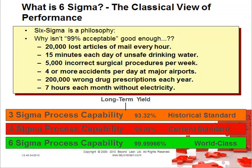If you've got 99% acceptable, you've got 20,000 lost articles of mail every hour, 15 minutes a day of unsafe drinking water, 5,000 hospital procedures every week that are incorrect, over 4 accidents a day at major airports, 200,000 wrong prescriptions each year, and 7 hours every month without electricity.